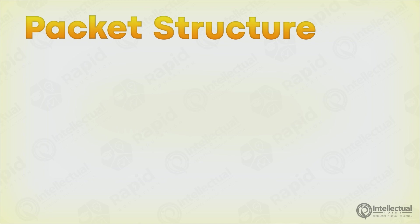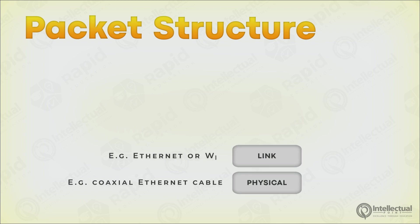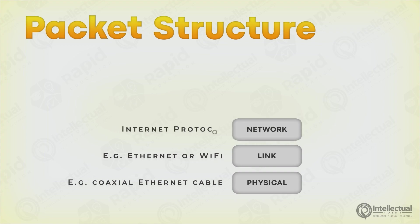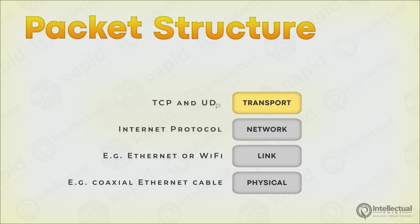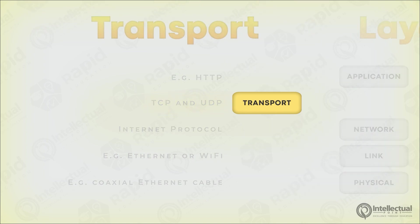Every packet on the internet has a structure consisting of five layers. At the bottom, you have the physical layer, then the link layer, network layer, transport layer, and application layer. Because we're only discussing TCP and UDP, we only need to focus on the transport layer.